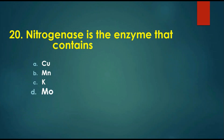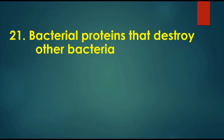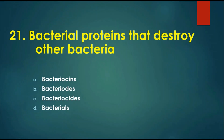Question 20: Nitrogenase is the enzyme that contains — options are: A) copper, B) manganese, C) potassium, D) molybdenum. The answer is molybdenum. The enzyme nitrogenase consists of two metalloprotein components: an iron protein also called dinitrogenase reductase (component 2), and a molybdenum-iron (MoFe) protein also called dinitrogenase (component 1).